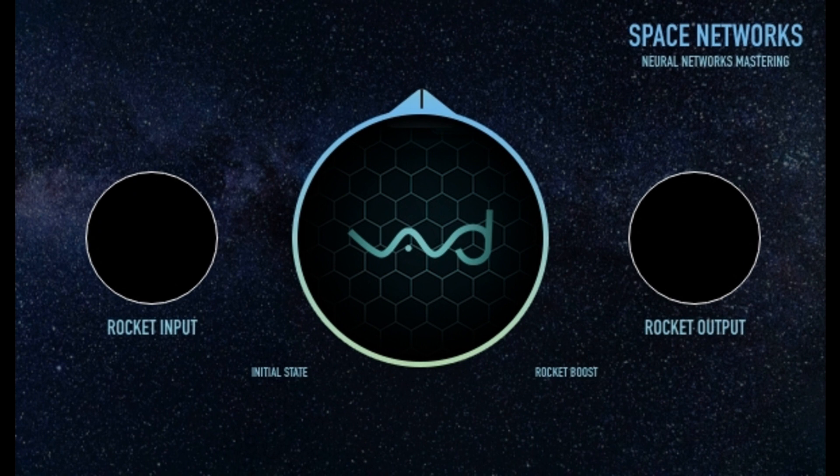The Space Networks Mastering is a plugin that enhances the mastering process. It has a powerful analog transformer inside that provides tones with balance and space.